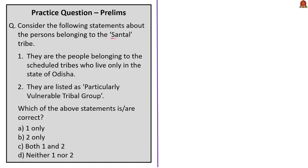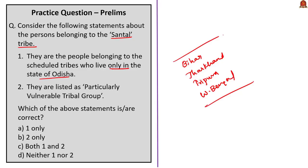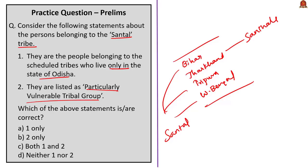This question is with respect to persons belonging to the Santal tribe. The first statement: they are scheduled tribe people who live only in the state of Odisha. This is wrong — Santals also live in Bihar, Jharkhand, Tripura, and West Bengal, where they are notified as Scheduled Tribes. The second statement: they are listed as a Particularly Vulnerable Tribal Group (PVTG). This is also incorrect — they are not classified under the PVTG category in any of these states. Both statements are wrong — answer is option D.